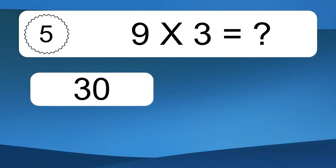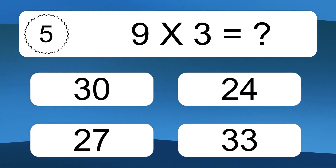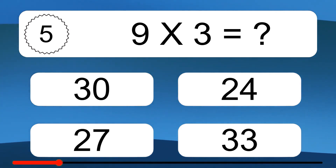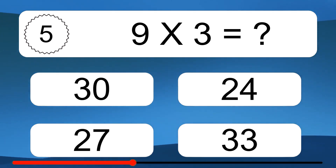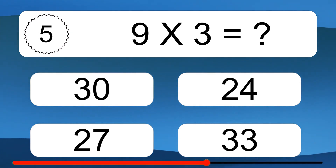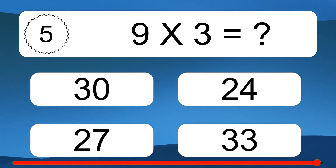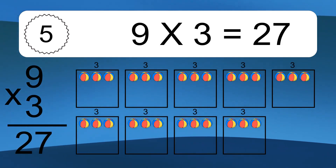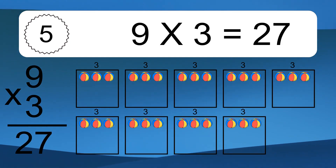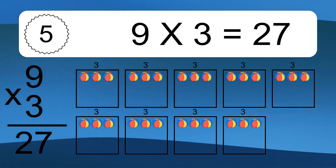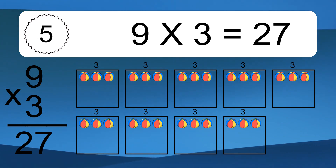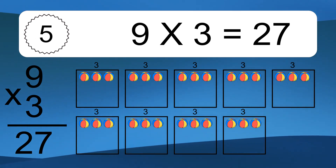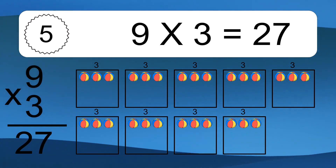9 times 3 equals what? 9 times 3 equals 27. We have 9 boxes, and each box has 3 colorful balls inside. If you count all the balls in all the boxes together, you will have 9 times 3 balls. This equals 27 balls.